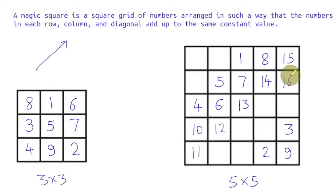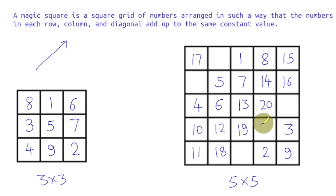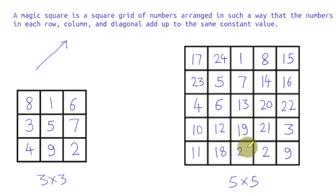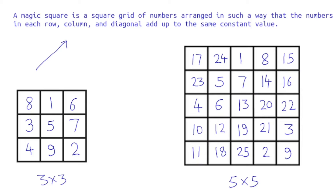So 16. Up and right, we need to wrap: 17. Up and right, wrap again: 18. Up and right: 19. Up and right: 20. The cell is filled so we go down: 21. Up and right: 22. Up and right — out of the square, wrap: 23. Up and right: 24. Up and right — out of the square, wrap down and we get 25. If you find the sum of rows, columns, and diagonals, you will notice they all come to the same constant value. This is how we generate a magic square.